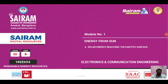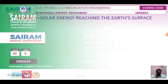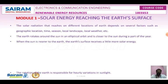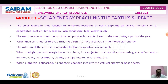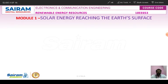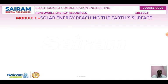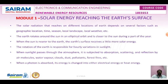Today's class we are going to see solar energy reaching the Earth's surface. Solar radiation is an electromagnetic radiation emitted by the Sun. The Sun converts its mass into light particles called photons. The solar radiation that reaches different locations of the Earth depends upon several factors, for example geographical location, time, season.